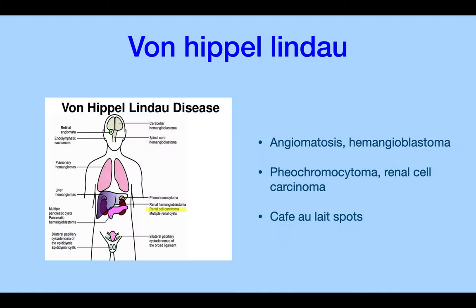Von Hippel-Lindau disease involves angiomatosis or hemangioblastoma, and can also present as pheochromocytoma and renal cell carcinoma — so it's not a good disease at all. It manifests with café-au-lait spots.